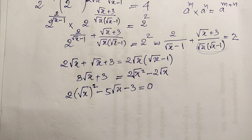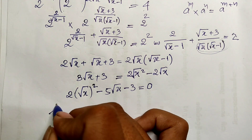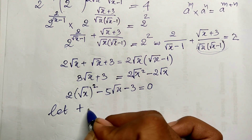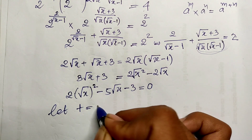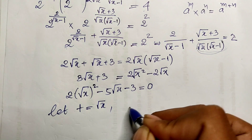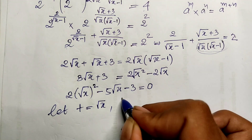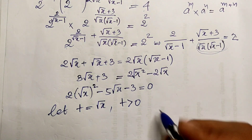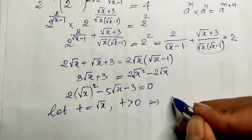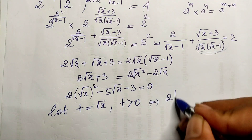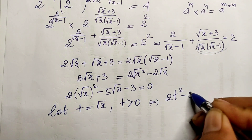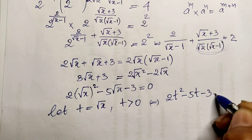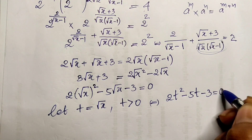Now I let t equal square root of h, where t is positive. So we get the new equation: 2t squared minus 5t minus 3 equals zero.